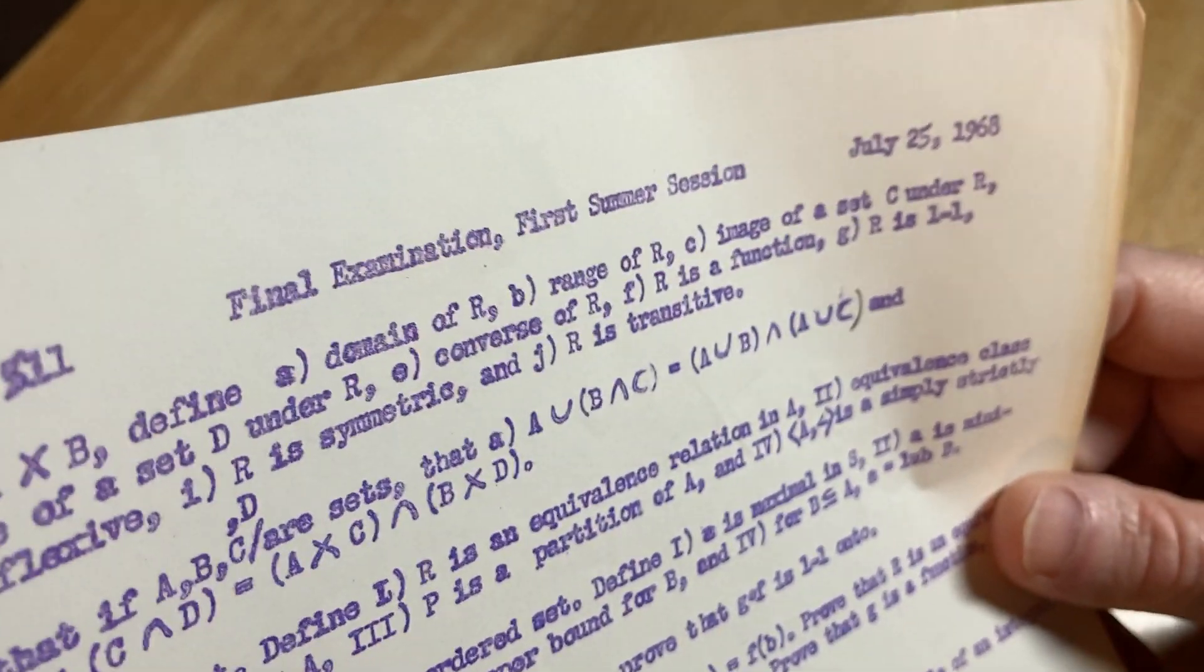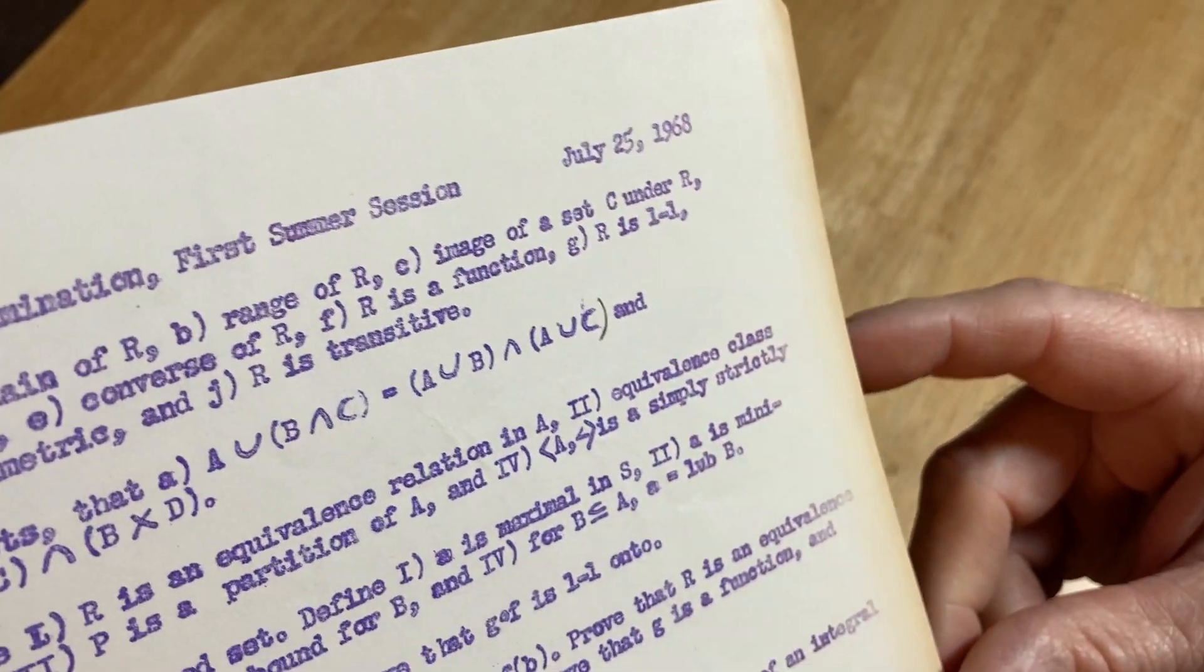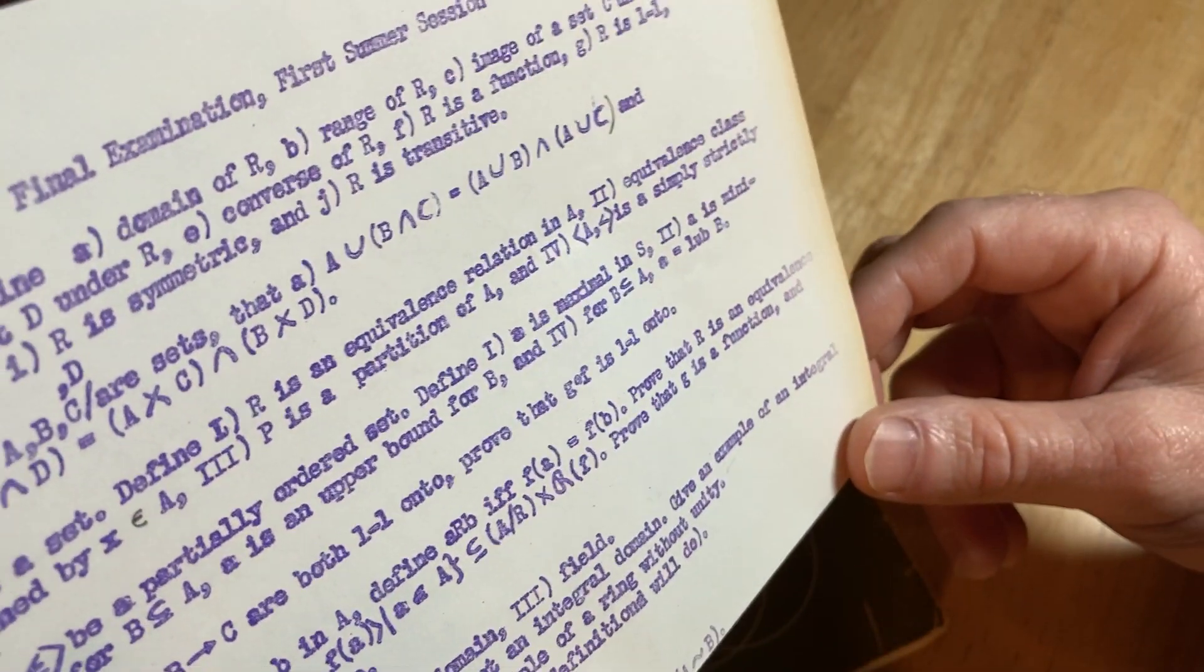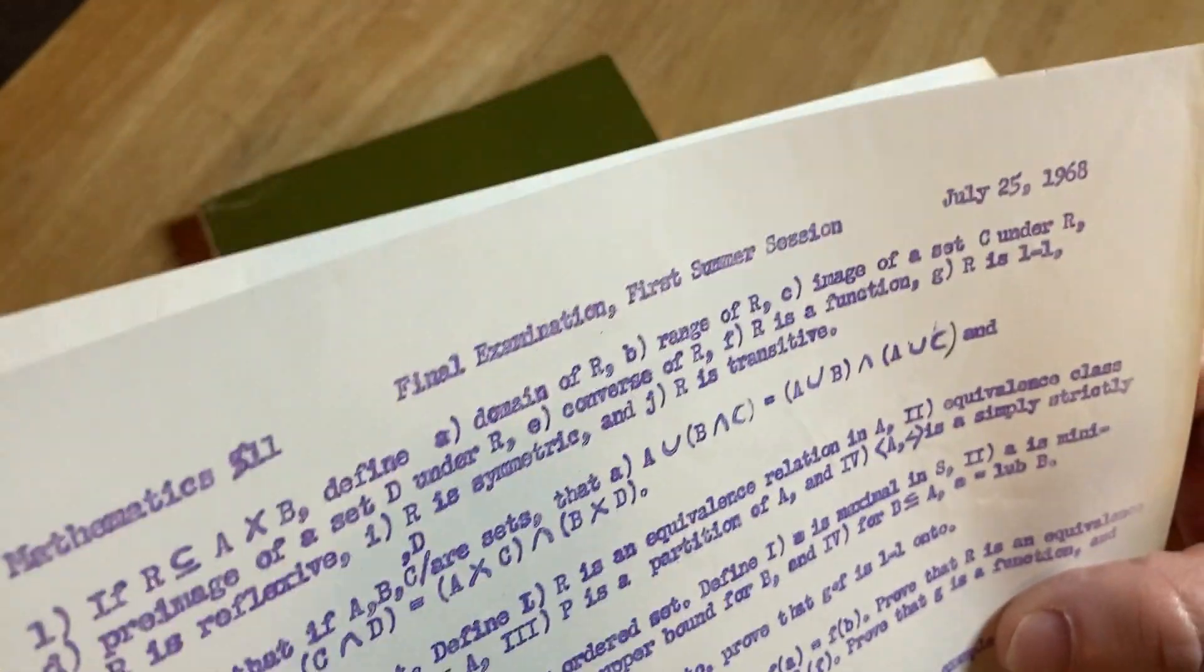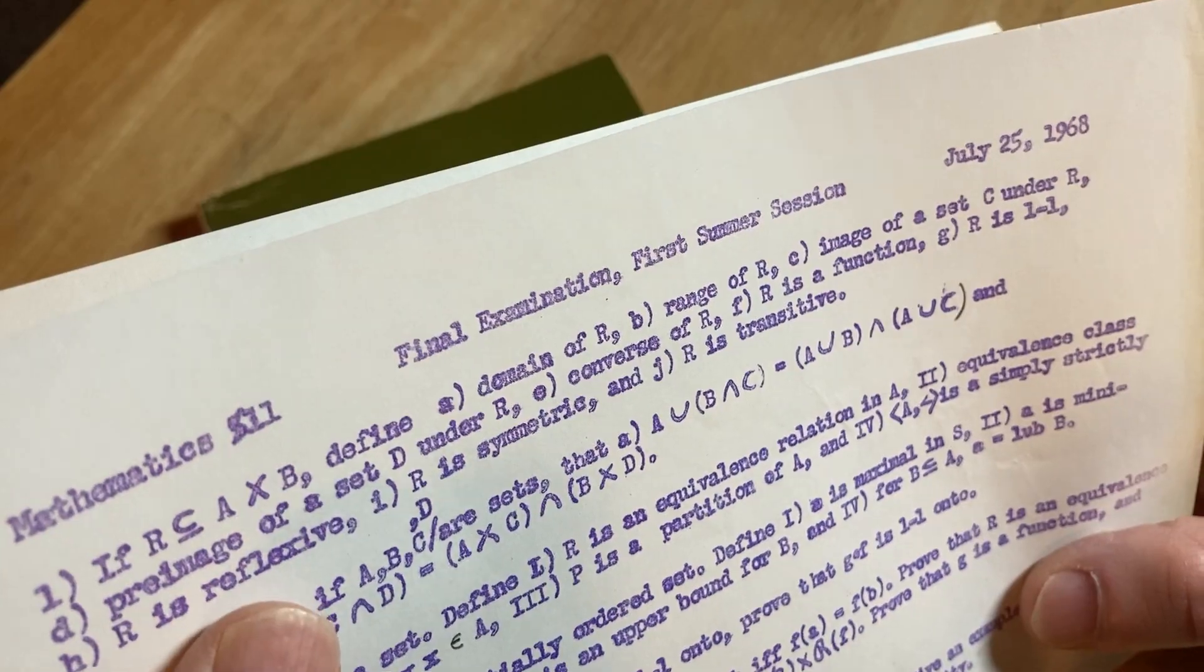Pre-image of a set D under R, converse of R, R is a function, R is one-to-one, R is reflexive, is symmetric, R is transitive. So, explain what all of those things mean in the case when R is a relation.